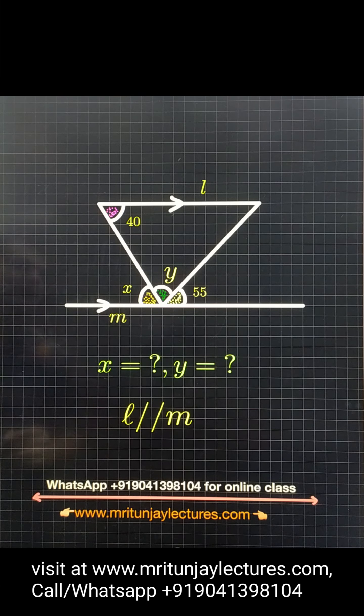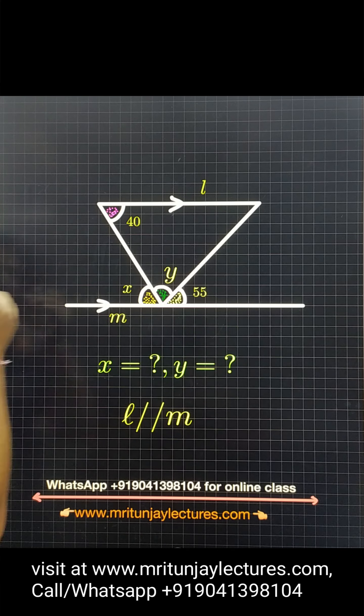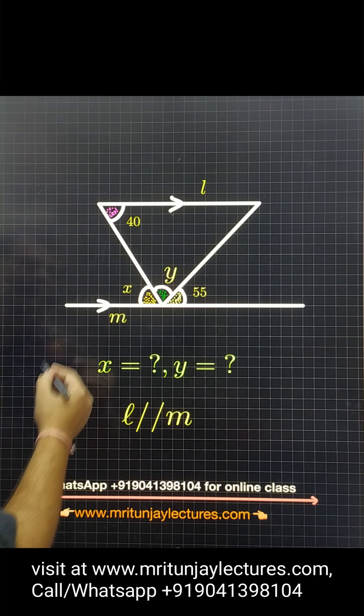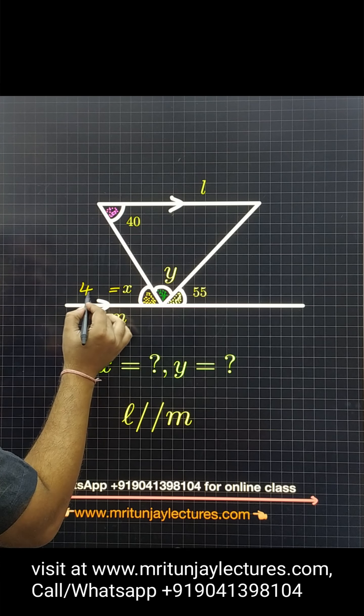Look here very carefully. If these lines, this one and this one, both lines are parallel and they intersect, then that angle and that angle are the same. So you can say this is 40 degrees.